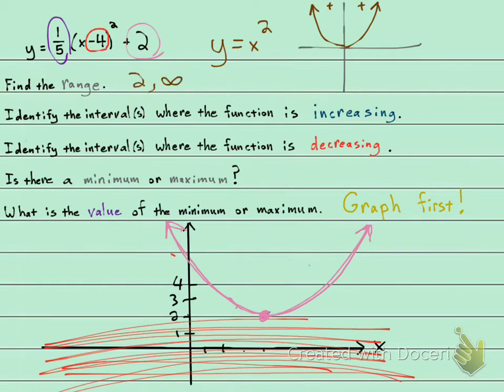My range is 2 to infinity. Interval notation, infinity always gets a parenthesis. And the 2 is going to get a bracket because the graph does actually hit here at 2.